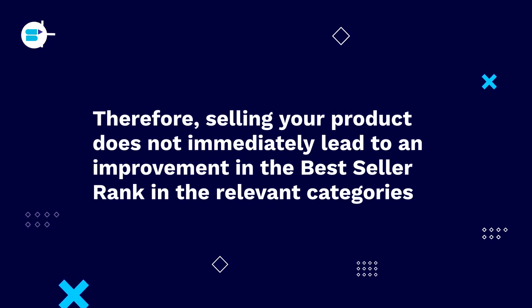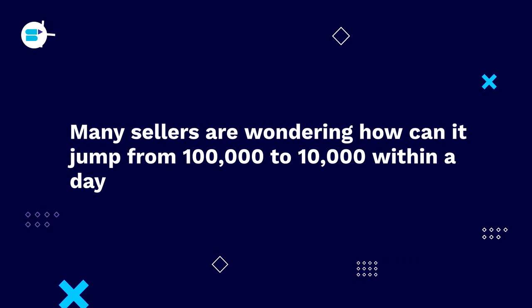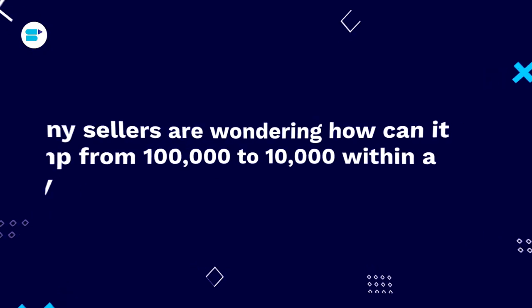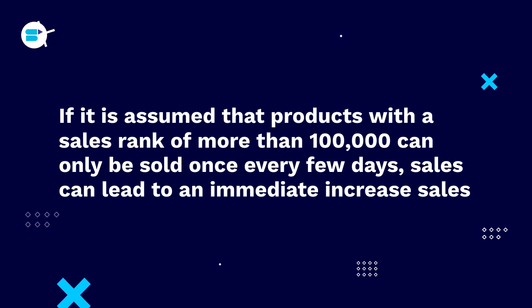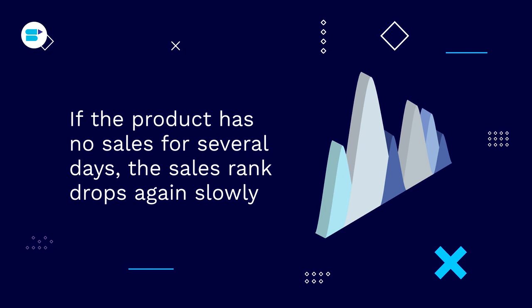Therefore, selling your product does not immediately lead to an improvement in best seller rank. If a product's sales rank is above 50,000, even a single sale can have a large impact. Products with a rank above 100,000 may only sell once every few days, so a sale can cause an immediate jump — but if there are no sales for several days, the sales strength drops again, either drastically or slowly depending on the category.